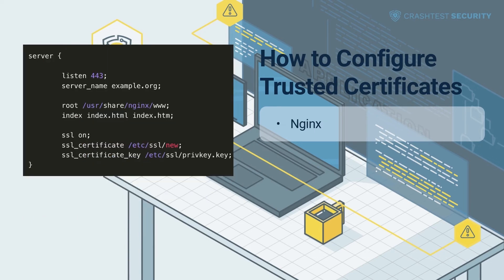Nginx: For Nginx, update the configuration file, which is usually located at /etc/nginx/nginx.conf, /etc/nginx/sites-enabled/your-site.com (Ubuntu/Debian), or /etc/nginx/conf.d/nginx.conf (CentOS). Add the following directive to the server section.